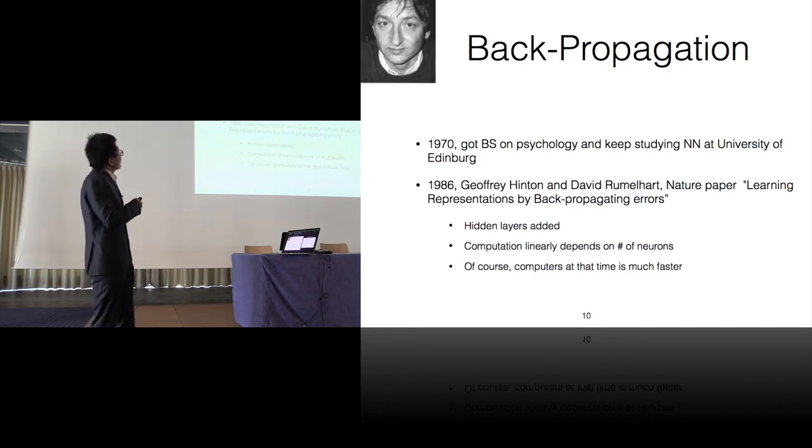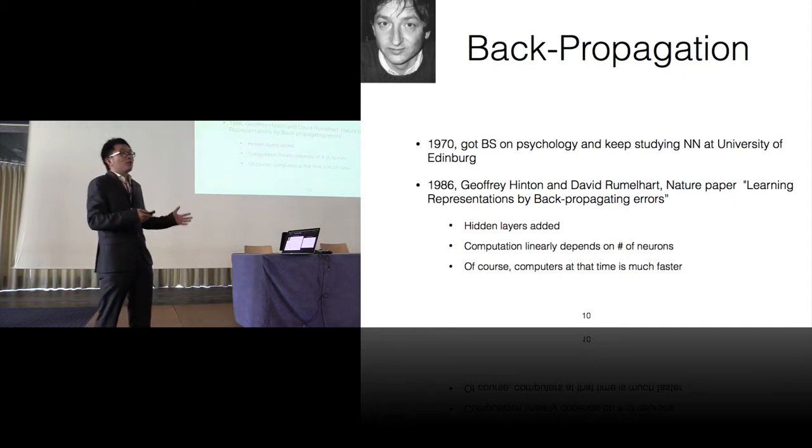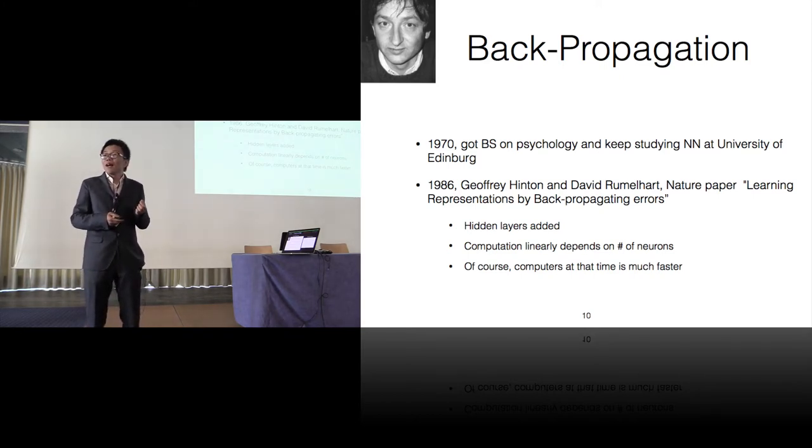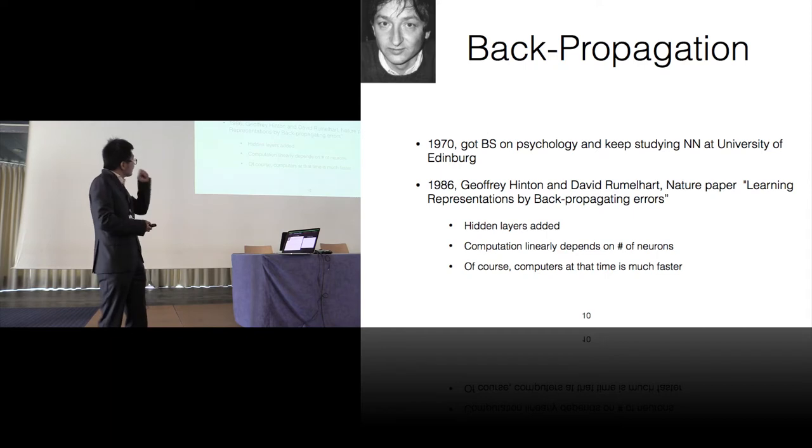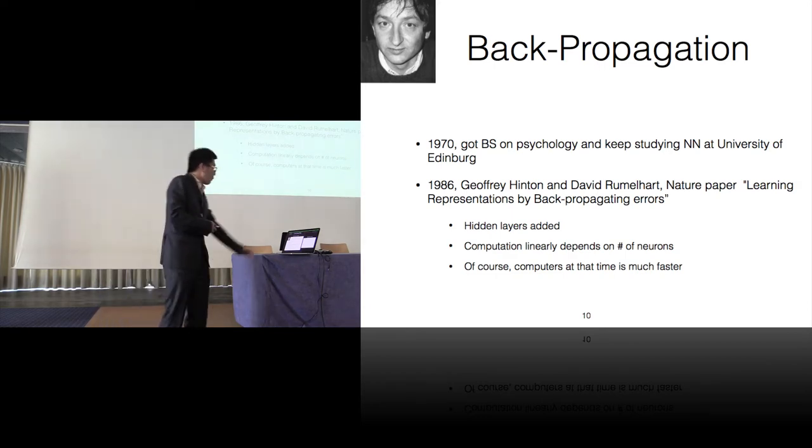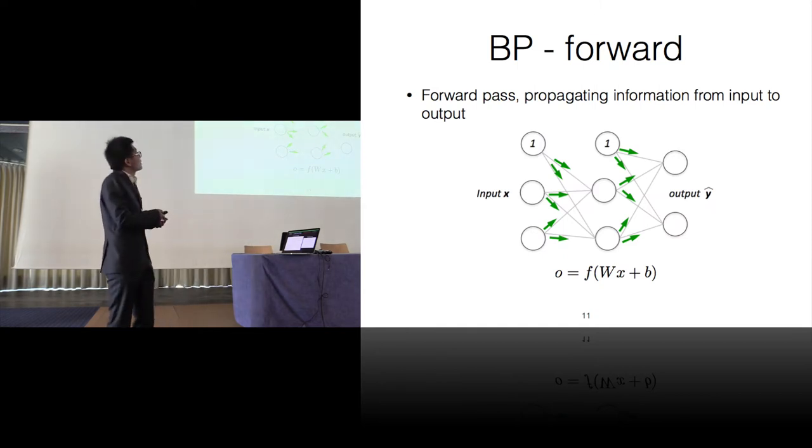So this guy is Geoffrey Hinton, godfather of deep learning. So he has a really interesting story, actually. He studied physics initially and then switched to architecture for just one day and then he switched back. But later on he thought physics is too messy, so he switched to psychology and then eventually he studied artificial intelligence in the University of Edinburgh. And in the 80s, he published a paper with David about this learning algorithm of backpropagation.